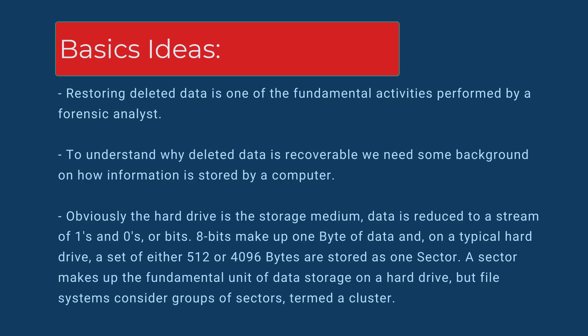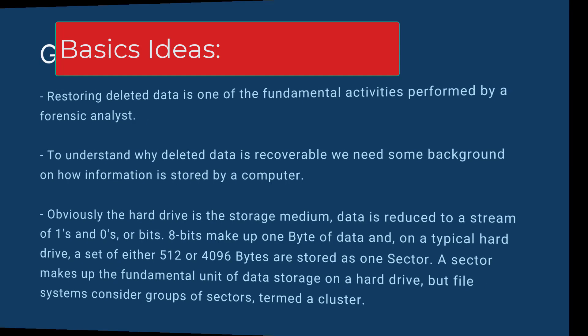Data is reduced to a stream of ones and zeros, or bits. 8 bits make up 1 byte of data and, on a typical hard drive, a set of either 512 or 4096 bytes are stored as one sector. A sector makes up the fundamental unit of data storage on a hard drive, but file systems consider groups of sectors, termed a cluster.